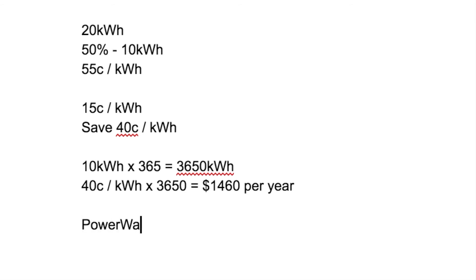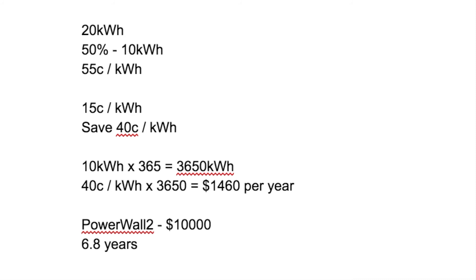Now the average price of a Powerwall 2 in Australia is currently priced at $10,000. So if you save $1,460 per year, that will equate to about 6.8 years — and that is the amount of time it will take for you to pay back your Powerwall. That number is actually less than the eight years quoted by most people it would take to pay back their Powerwall 2 with the use of solar panels charging their electricity during the day. So after 6.8 years, any saving you accrue is a bonus, and you can use that money to possibly buy some solar panels so that your charging is now free, as opposed to paying 15 cents per kilowatt hour off-peak.